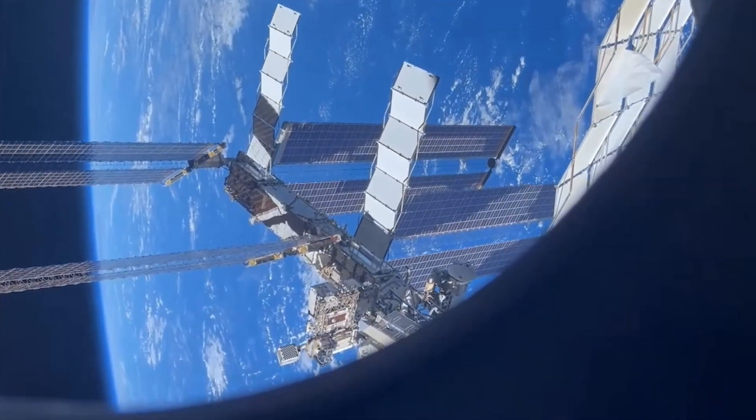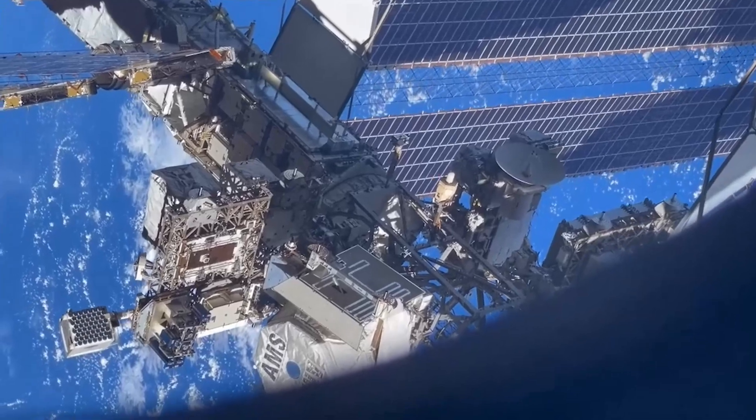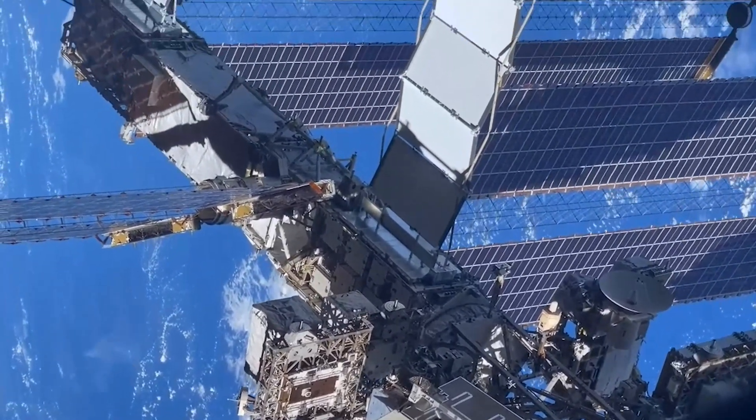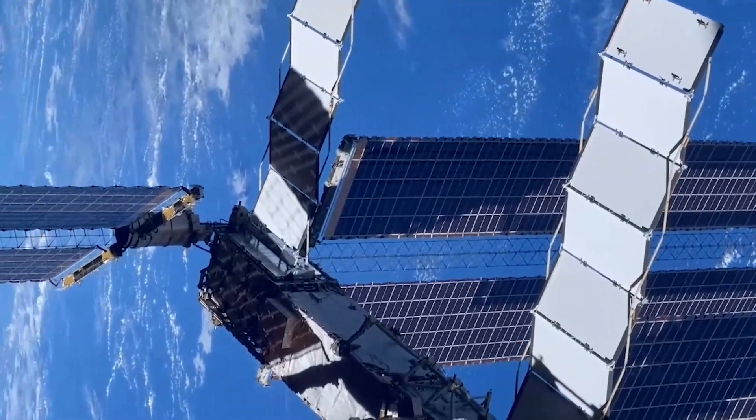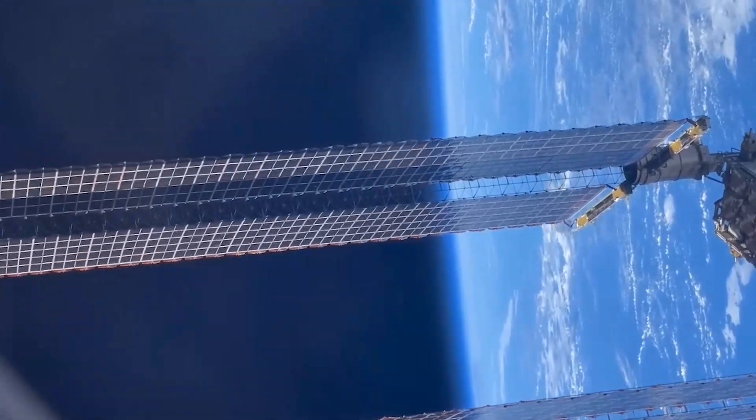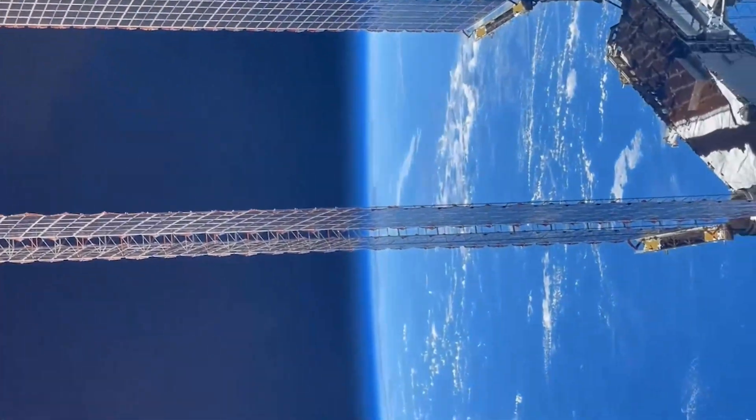APH stands for Advanced Plant Habitat, and it is an experiment that allows you to grow plants in space in a super controlled environment. APH has been active on the ISS for several years now, and I get the pleasure of being able to work alongside a lot of the people who designed and built it as well as the science team on the ground. Just like any good science experiment, there's a control and an actual experiment unit.